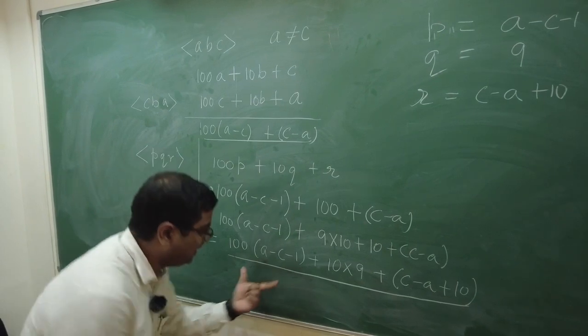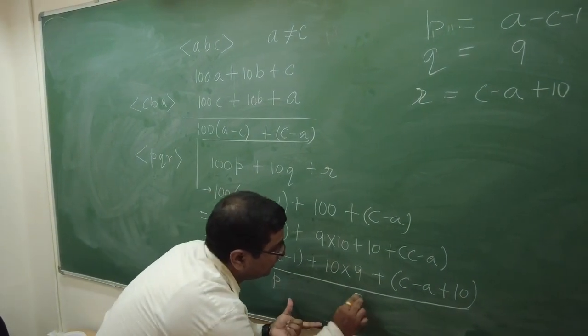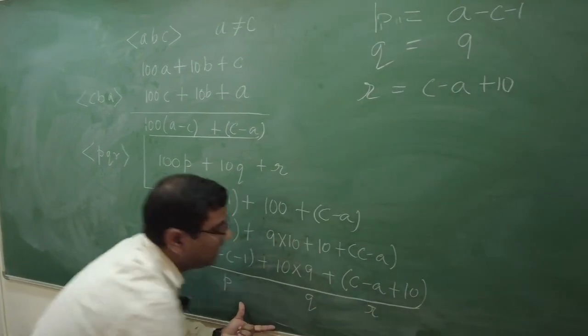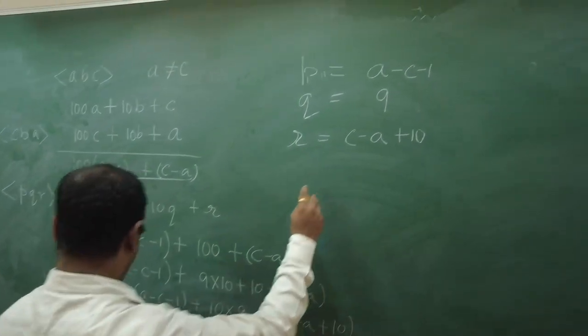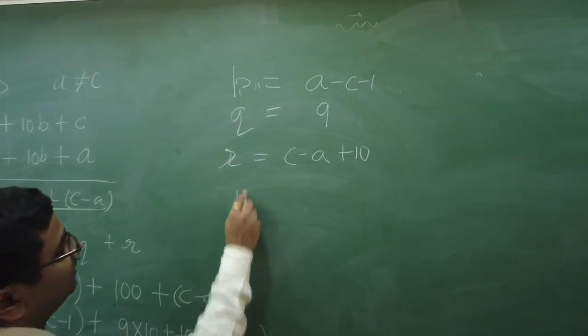So, hence, if you see this is P. Let me write it as P. This is Q. And, this is R. If I have to reverse the order of the digits, the new number will be, let me rewrite the third number. So, this is number 3.